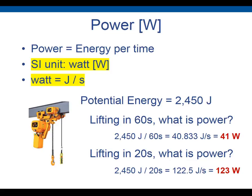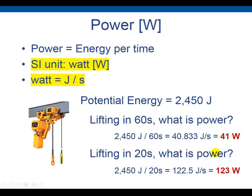Power is energy per time, and the SI unit is the watt. Using the previous example of lifting a 50 kg chair 5 meters (2450 J), if we want to lift it in 60 seconds, we need 2450 ÷ 60 ≈ 41 watts. If we want to lift it more quickly, in 20 seconds, we need 3 times more power — about 123 watts.